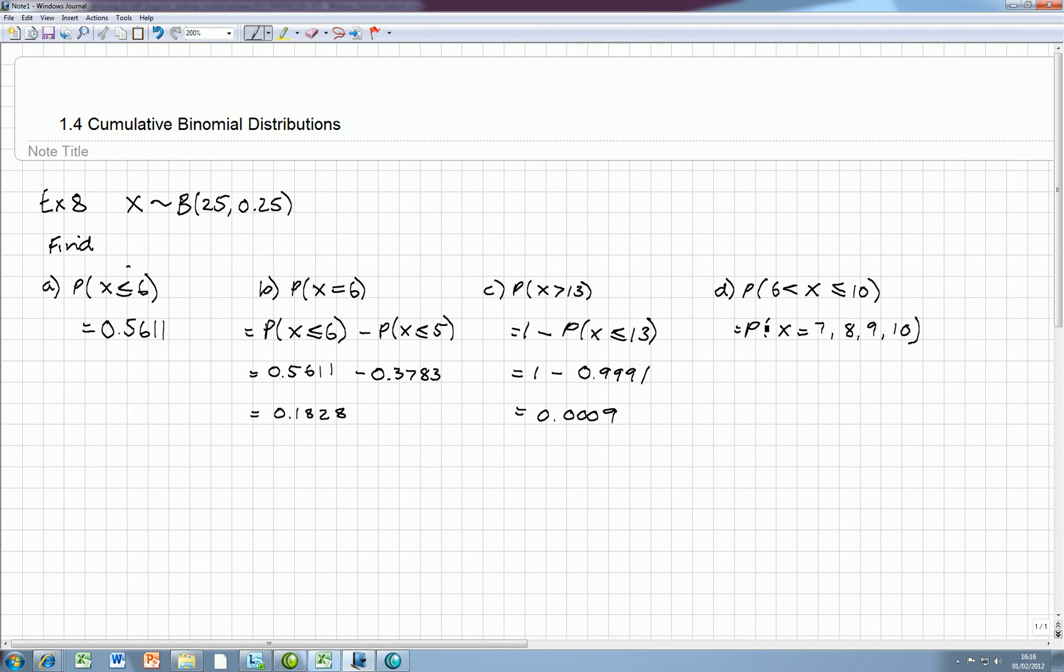I'm going to think about how we can get that. The first way of doing that is to find the probability of x less than or equal to 10, and then subtract the probability of x less than or equal to 6. If we work that out, it'll be 0.9703 minus 0.5611. And in your calculator, that's going to come to 0.4092.